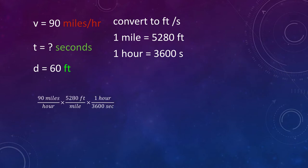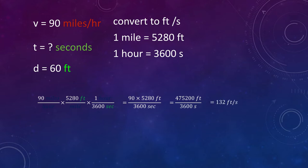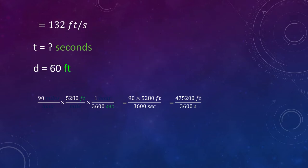Make fractions to cancel out miles and hours. So, we get 90 miles per hour times 1 hour over 3,600 seconds times 5,280 feet over 1 mile. That gives us 90 times 5,280 feet over 3,600 seconds equals 475,200 feet over 3,600 seconds equals 132 feet per second. So, the velocity is 132 feet per second.